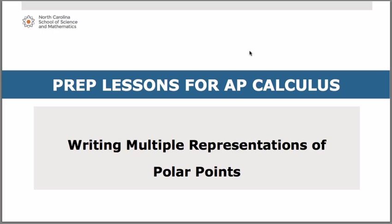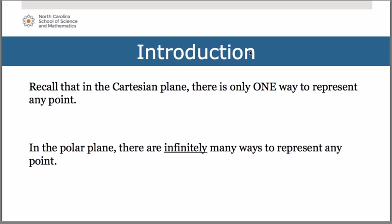In this lesson, we're going to discuss how to write multiple representations of a polar point. Recall that in the Cartesian xy plane, there is only one way to represent any point. For example, the point in the third quadrant, negative 3, negative 2 — that is the only way to identify that point at that location. In the polar plane, however, there are infinitely many ways to represent any single point.